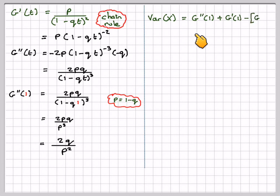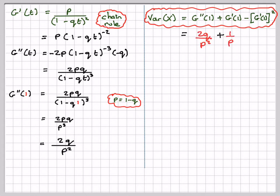So, the variance of X is G''(1) plus G'(1) minus [G'(1)]². So, substituting in, we've got 2q over p² from here. From the first part, we know the mean is 1 over p minus the mean squared, 1 over p².